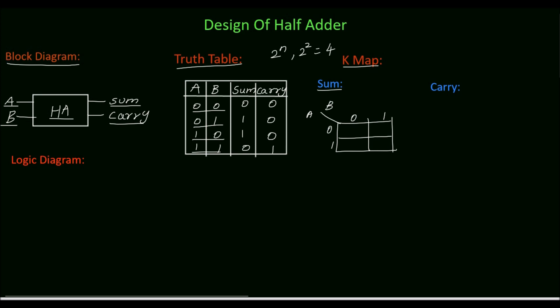In SOP we represent the input 0 as complement of the variable and 1 as the variable itself. Likewise write for B: 0 is represented with B complement and 1 is represented with B.